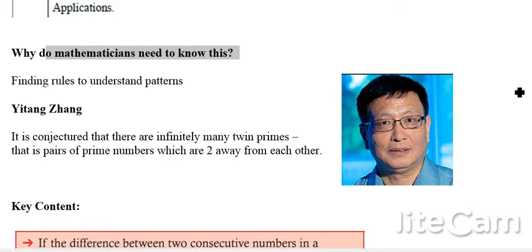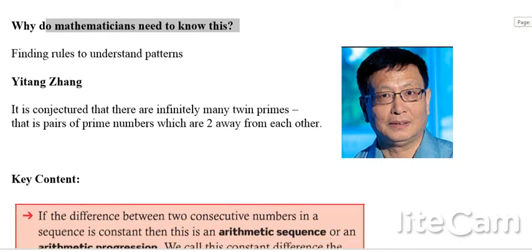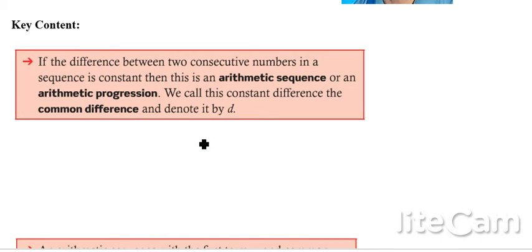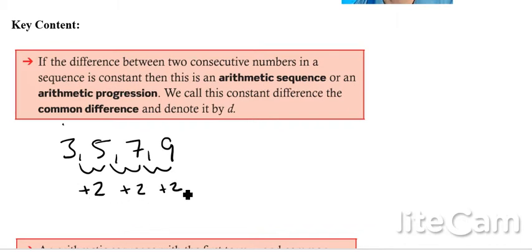This is the key content. If the difference between two consecutive numbers is constant, then we have an arithmetic sequence or an arithmetic progression. To give a simple example, I've got the sequence 3, 5, 7, and 9. We can see quite clearly this is arithmetic because the common difference each time is plus 2. So this is an arithmetic sequence.